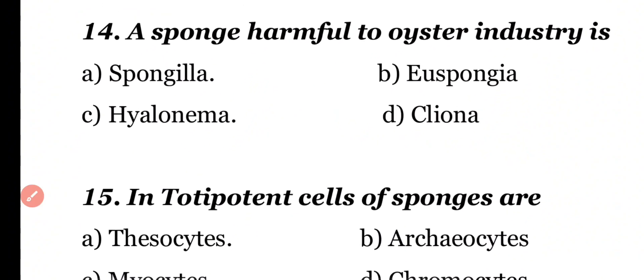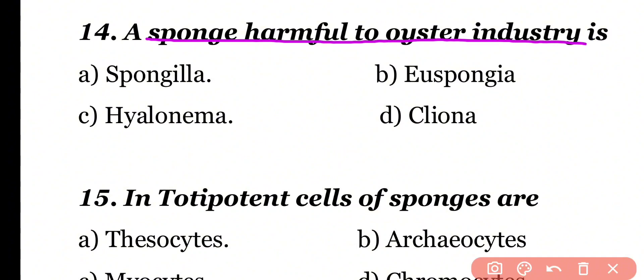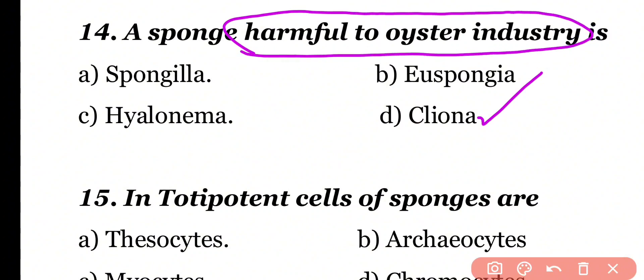Question number 14. A sponge harmful to the oyster industry is: spongyla, euspongia, hyalonema, or cliona. Correct answer is option D. Cliona is a marine sponge that is harmful to the oyster industry.